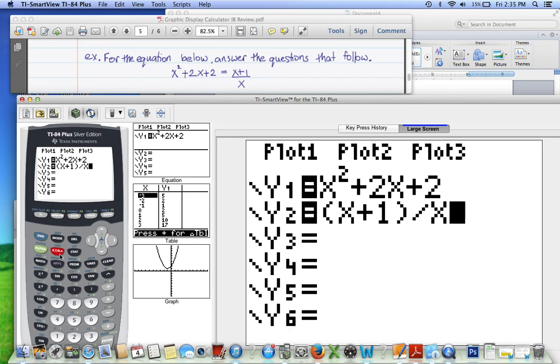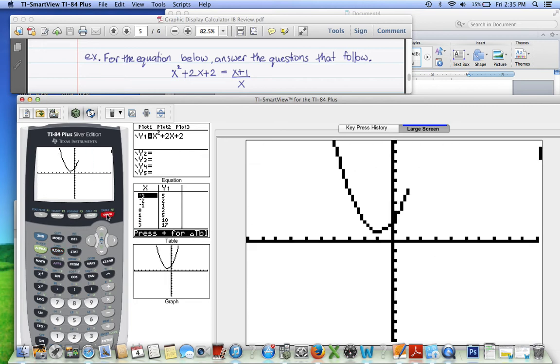So now that we've put in both the left side and the right side of the equation, we can now graph it. And as you can see, the left side comes up as a parabola, and then the right side comes up.